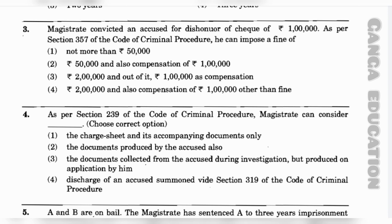Question number 4: As per Section 239 of the Code of Criminal Procedure, the magistrate can consider — option 1: the charge sheet and its accompanying documents only; option 2: the documents produced by the accused also; option 3: the documents collected from the accused during investigations but produced on application by him; option 4: discharge of an accused summoned under Section 319 of the CrPC. The correct answer is option 1 — the charge sheet and its accompanying documents only.